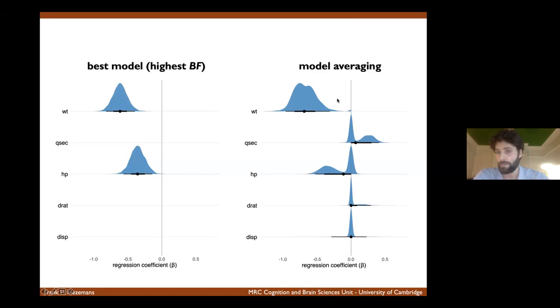But for example, horsepower, we're not so certain anymore. And you can see this kind of spike at zero, which is now included. And this reflects the fact that some models do not include horsepower as a predictor. And yet there's still a pretty good explanation of the data. And that's why the model average posterior takes into account the estimate from those models as well.